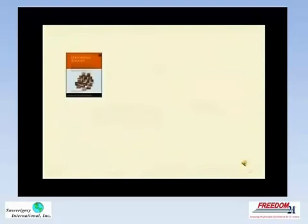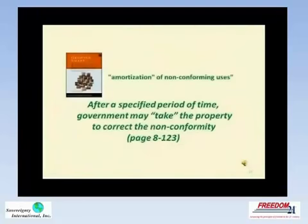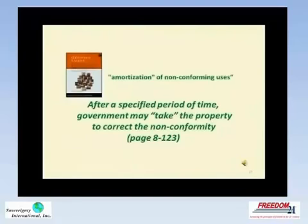A little-known provision in the model statutes is called amortization of non-conforming uses. This program allows government to set a time to bring property into compliance and, if that deadline is not met, take the property from the owner through eminent domain — completely ignoring the constitutional requirement that eminent domain be invoked only to take land for public use.